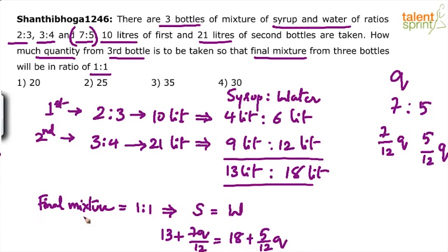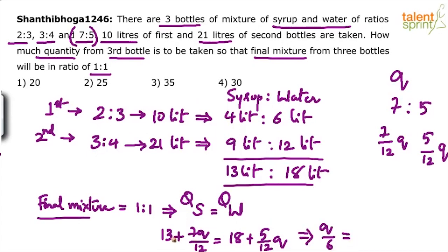The final mixture has syrup and water in the ratio 1:1, so total syrup equals total water: 13 + 7Q/12 = 18 + 5Q/12. Simplifying: 7Q/12 − 5Q/12 = 2Q/12 = Q/6. Therefore Q/6 = 18 − 13 = 5, which gives Q = 6 × 5 = 30 liters. So 30 liters should be taken from the third bottle — option 4 is the answer.